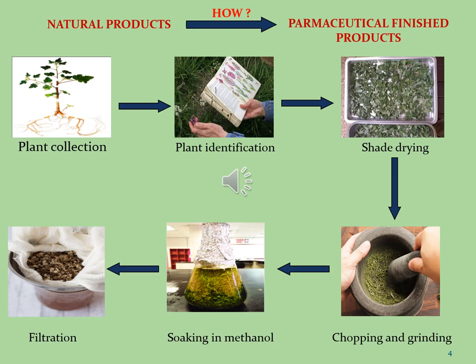The next step is soaking. In this step, the powdered plant material is dipped in methanol — a polar organic solvent — because our target is to extract the maximum number of phytoconstituents from low to high polarity. The next step is filtration, carried out using Whatman paper, simple paper, or porcelain cloth. Here we get the final methanol extract in the form of a filtrate.